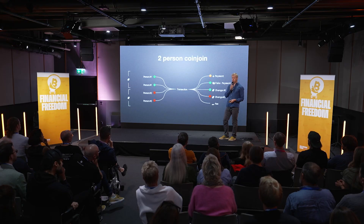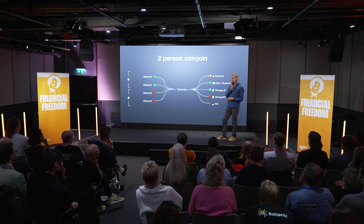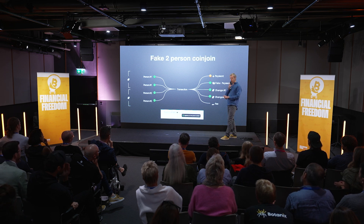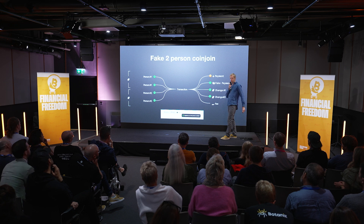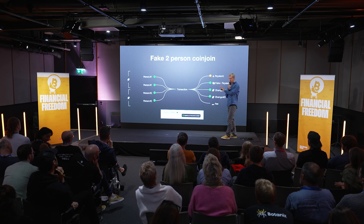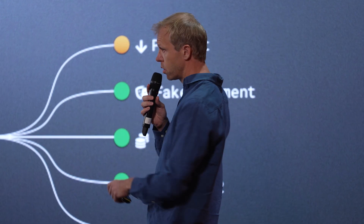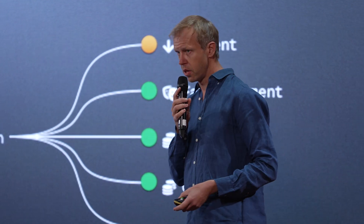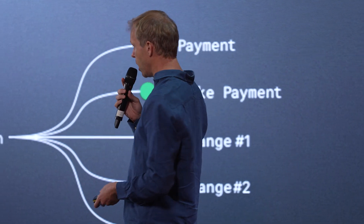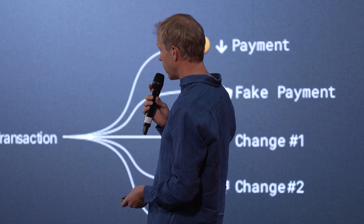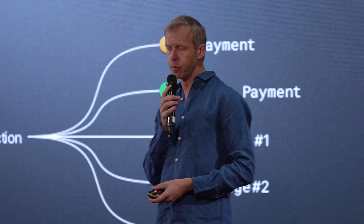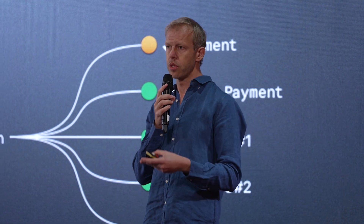What if we simplify things still further? We can have basically the same transaction but with just one person. On-chain it looks exactly the same as the two-person version, but now we have a fake two-person CoinJoin — making it more difficult to determine which is the real payment and which is the fake. Sparrow will create this kind of transaction for you if you click the privacy button at the bottom, and it's useful to use these approaches to reduce the probabilities.